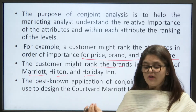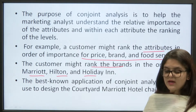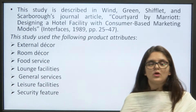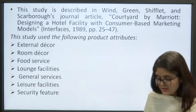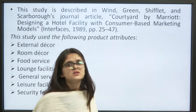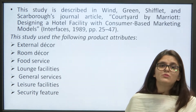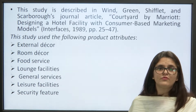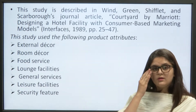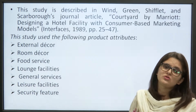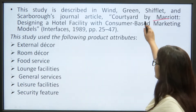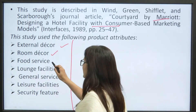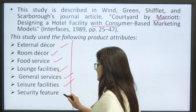The best known application of conjoint analysis was used to design the Courtyard by Marriott hotel chain. This study was described in Windgreave, Shiffleft and Scarborough's journal article 'Courtyard by Marriott: Designing a Hotel Facility with Consumer Decision-Making Models,' published in Marketing Interfaces, 1989, pages 225–247. The study used the following product attributes: external decor, room decor, food services, lounge facilities, general services, leisure facilities, and security features.